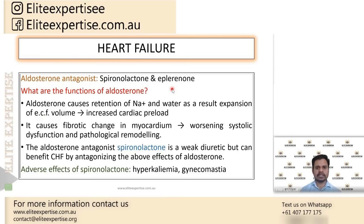Spironolactone is given when the combination of ACE inhibitor and beta blocker fails to show adequate improvement. We do not use spironolactone as a first-line agent. We always reserve spironolactone for when the combination of ACE inhibitors and beta blockers fails to produce proper improvement, then we add spironolactone to the therapy.